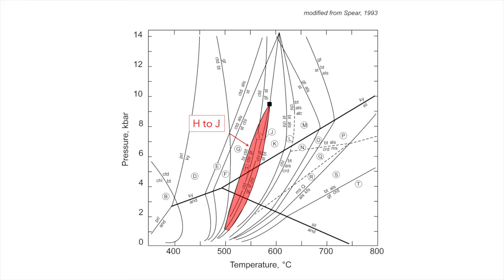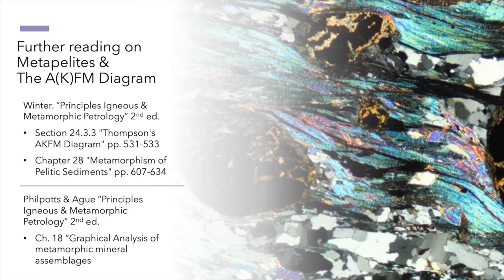If we find more aluminous rocks nearby that contain an aluminous silicate in their paragenesis, we can further constrain the pressure-temperature conditions. For a more thorough discussion of AFM diagrams and progressive metamorphism of pelitic rocks, check out these chapters in either Winters or Philpotts' Igneous and Metamorphic Petrology textbooks.